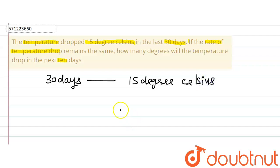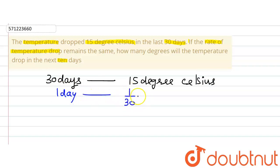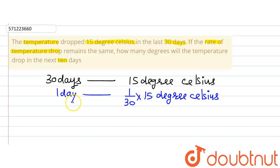From this we can say that in one day the temperature drop was 1/30 multiplied by 15 degrees Celsius — because 30 goes to the other side and divides. So the temperature drop was 1/2 degree Celsius per day.